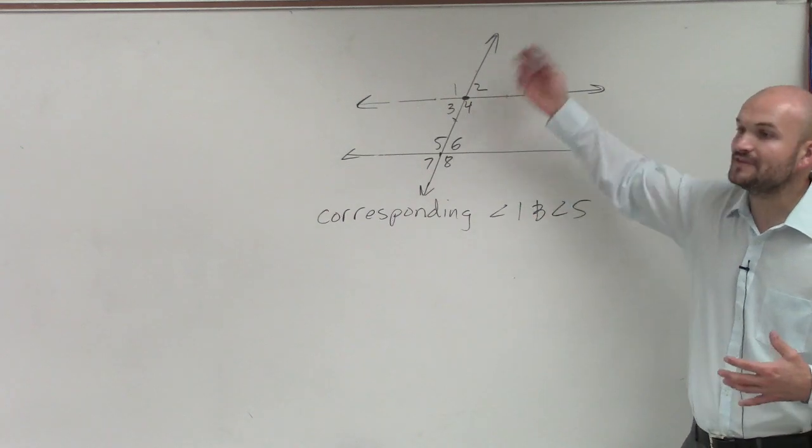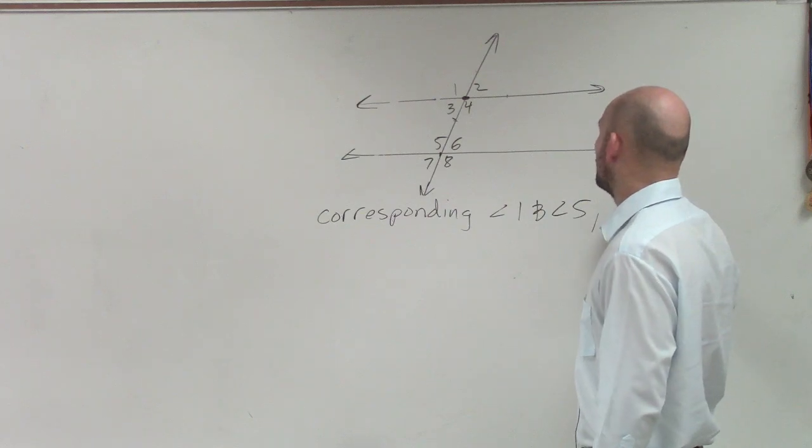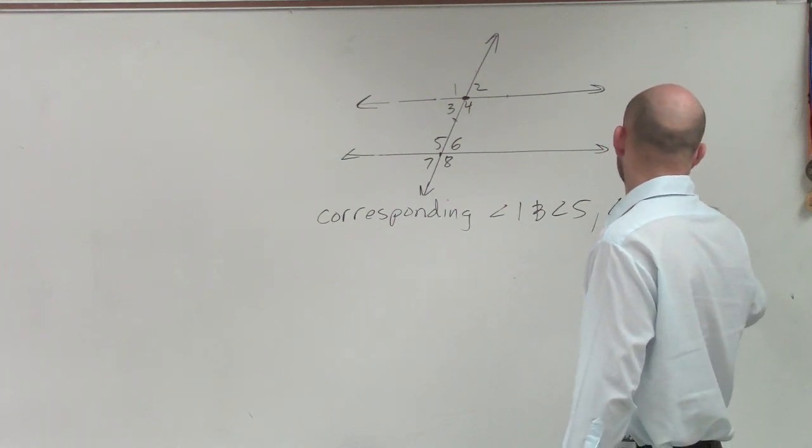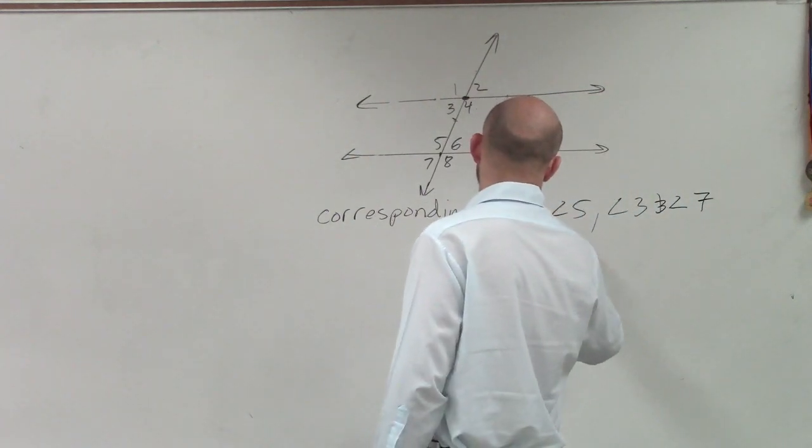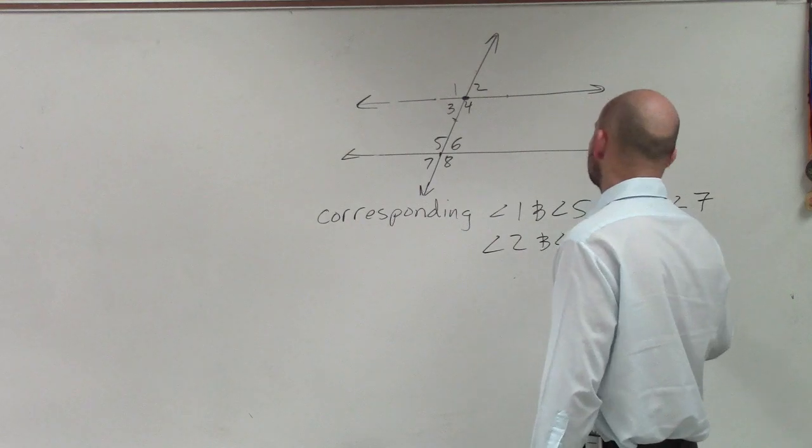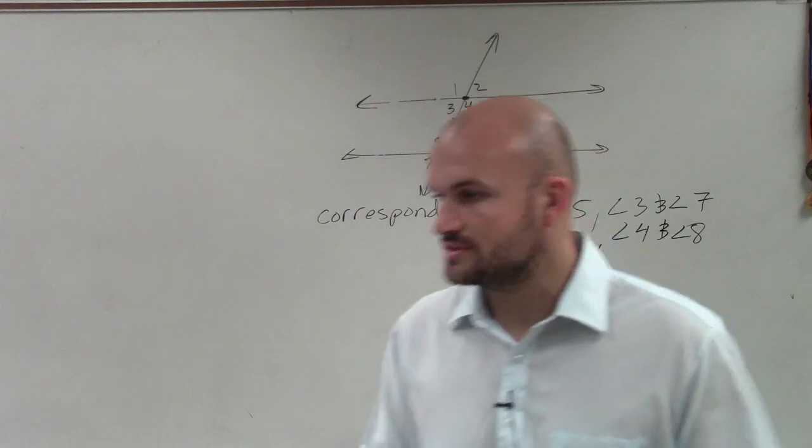So corresponding angles, if these had parallel lines, they'd be equal to each other, but we don't have parallel lines. So you could say angle 1 and angle 5, angle 3 and angle 7, angle 2 and angle 6, and angle 4 and angle 8. Therefore, there's your examples of all those corresponding angles.